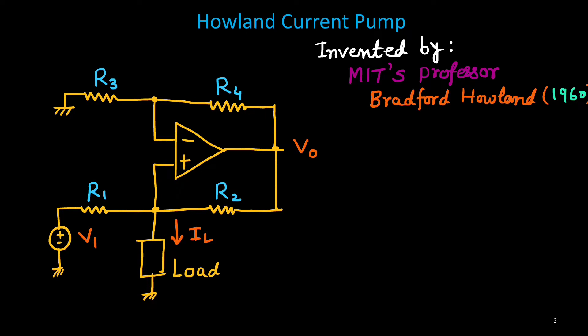And here, we will try to prove that this current IL is given by V1 by R1 if R4 upon R3 equals to R2 upon R1. If that condition is satisfied, then current IL is independent of the load and it is simply given by V1 upon R1.